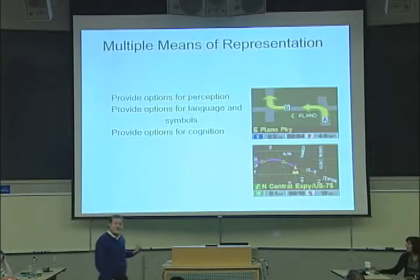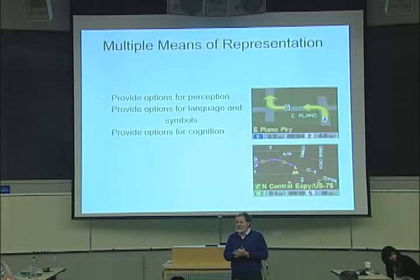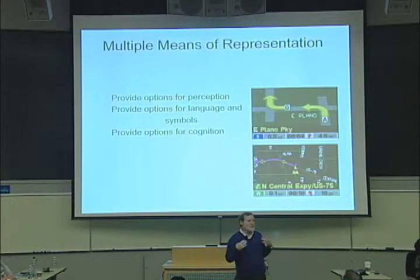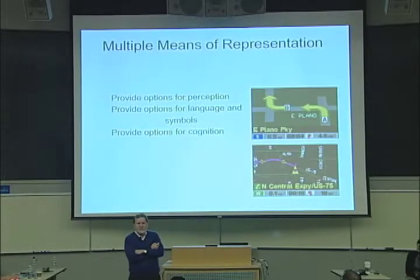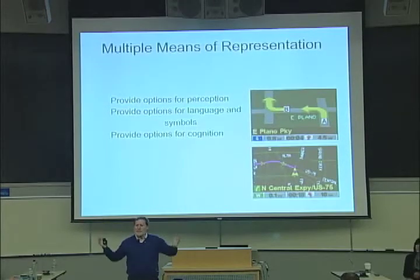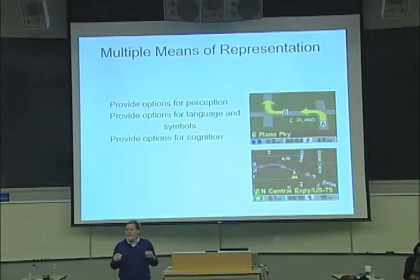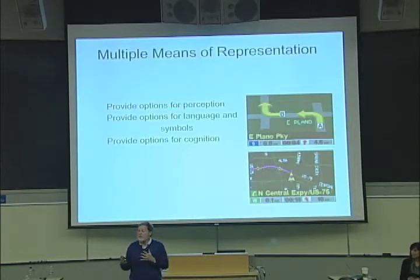The last option is options for cognition. Why don't we have curricula that are this good? It says people are different cognitively in what would help them. Some people like to just know what's the next turn — they don't want a big map. So it will just show next turn. But other people find that annoying — what they want to know is where the heck am I? Give me a map, give me a grid.